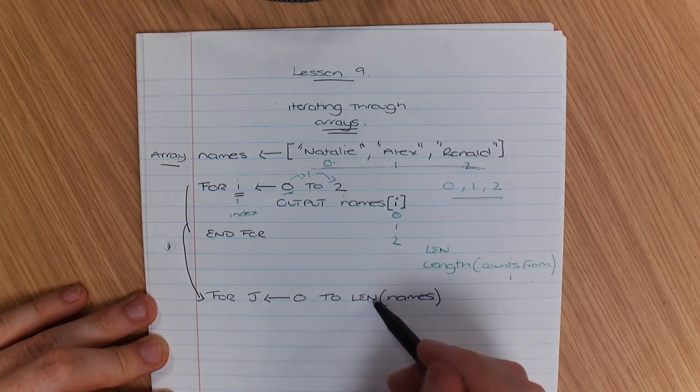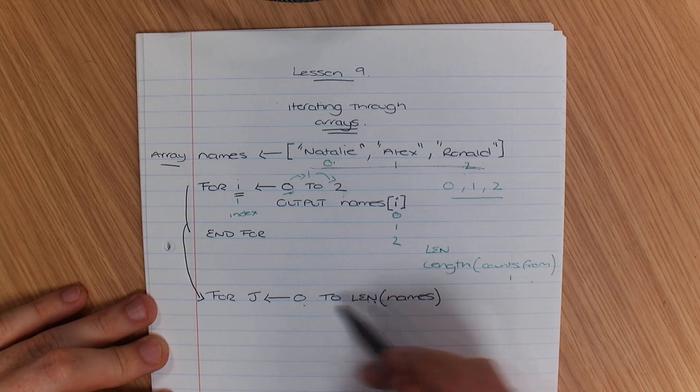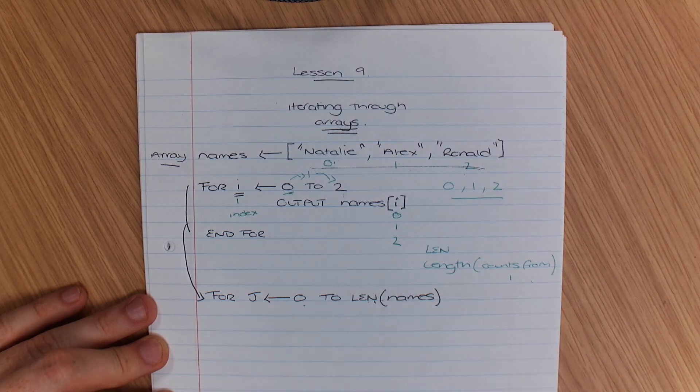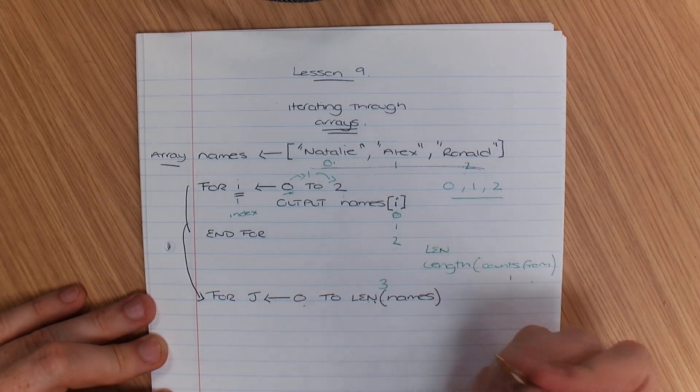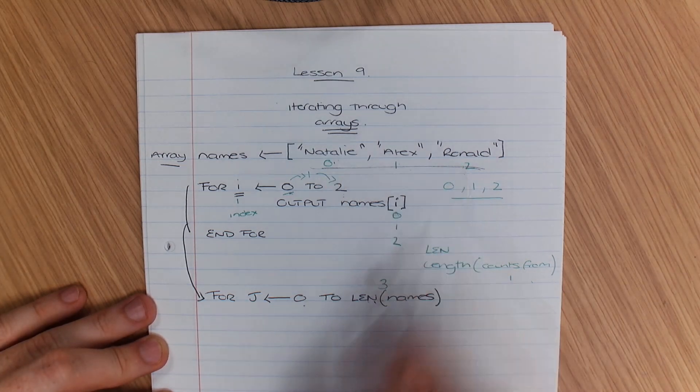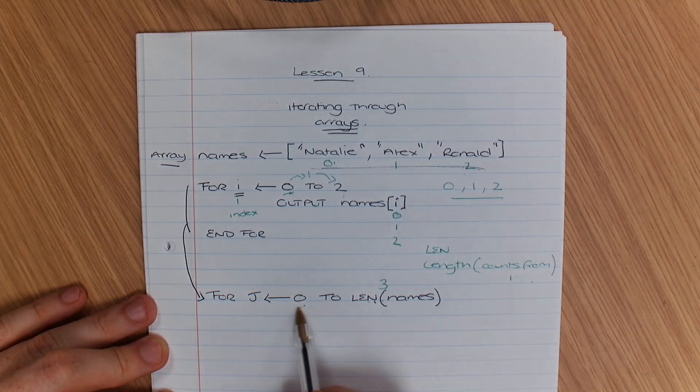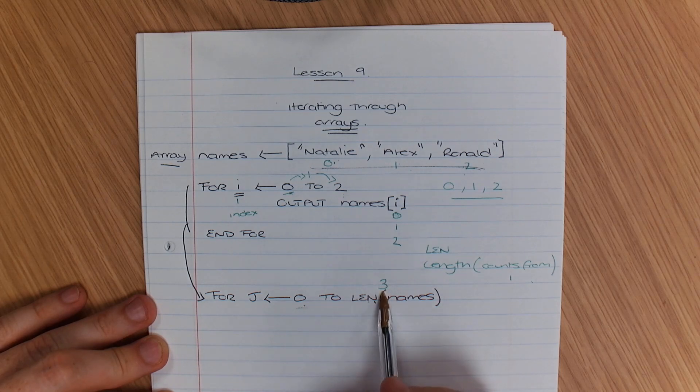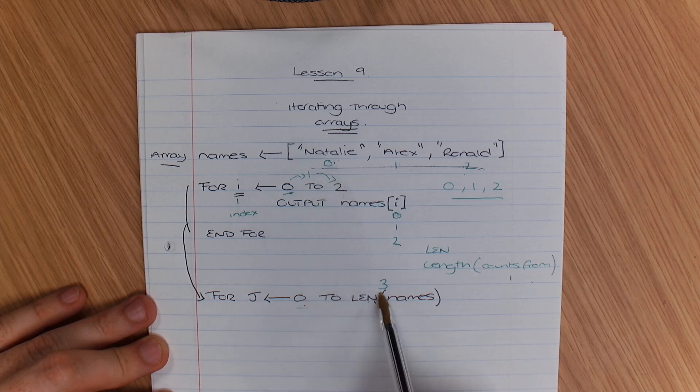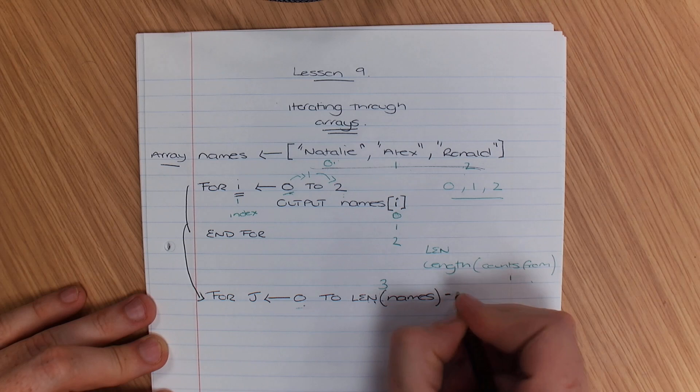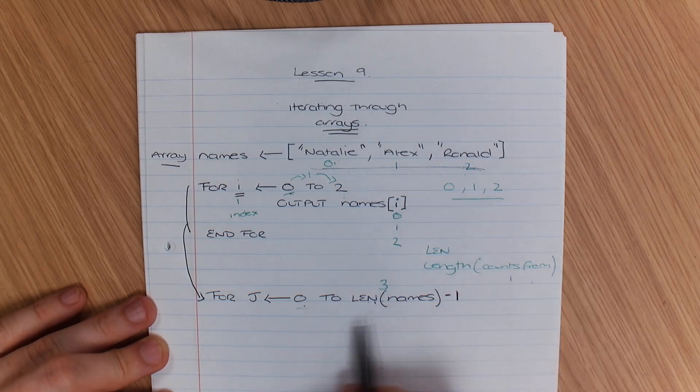The difference between a len and an index is len would be 3, because it starts counting at 1. Our index starts at 0. Now as you can see, that's 3. But if I was to use j, that would go 0 to 3. So what we have to do is subtract 1, minus 1, from that list.